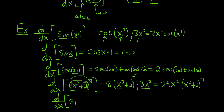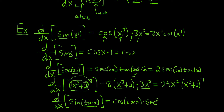Let's have some fun: d/dx of sine of the tangent of x. The inside function is tangent of x, and the outside function is sine of x. So we take the derivative of sine, which is cosine, and leave the inside untouched: cosine of the tangent of x, times the derivative of the inside. The inside function is tangent, so its derivative is secant squared x. I hope this video has been helpful.